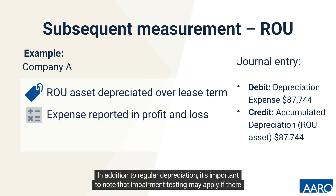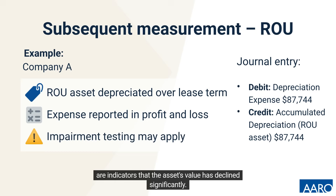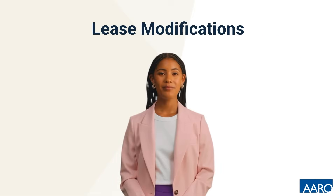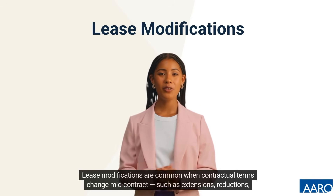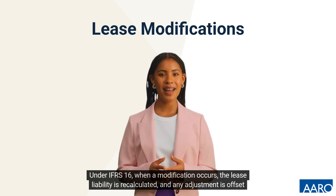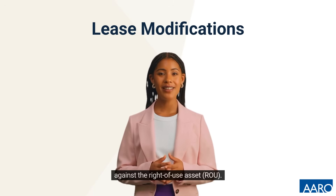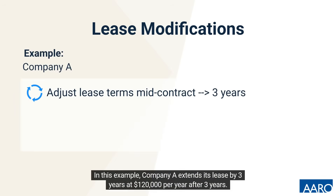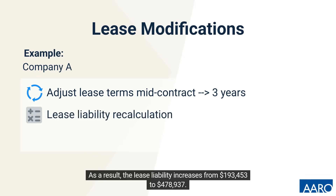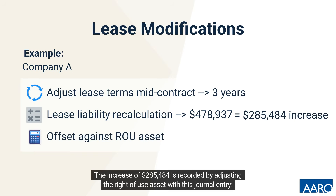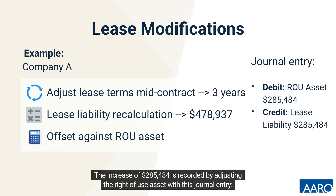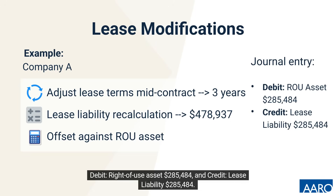In addition to regular depreciation, impairment testing may apply if there are indicators that the asset's value has declined significantly. Lease modifications are common when contractual terms change mid-contract, such as extensions, reductions, or changes in payment terms. Under IFRS 16, when a modification occurs, the lease liability is recalculated and any adjustment is offset against the right-of-use asset. In this example, Company A extends its lease by three years at $120,000 per year. As a result, the lease liability increases from $193,453 to $478,937. The increase of $285,484 is recorded as: Debit right-of-use asset $285,484 and Credit lease liability $285,484.